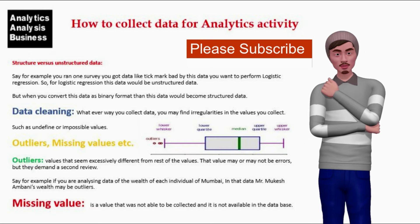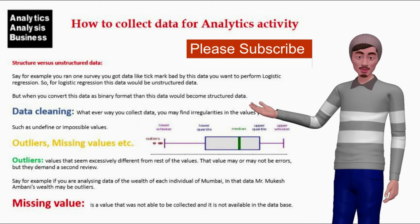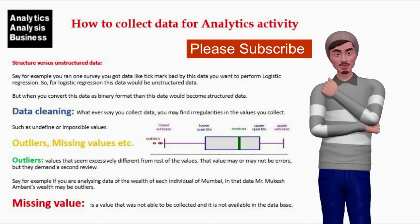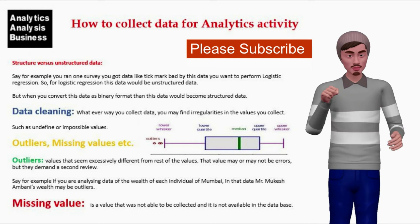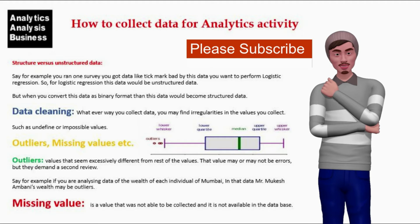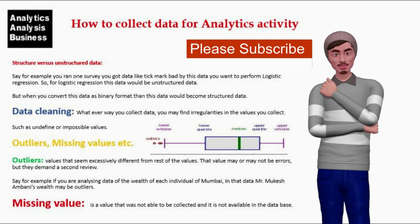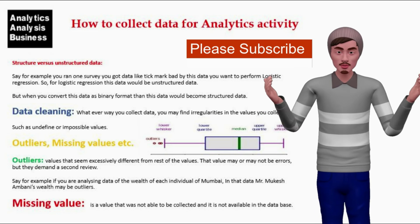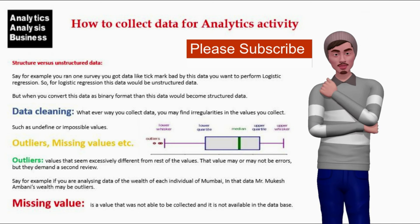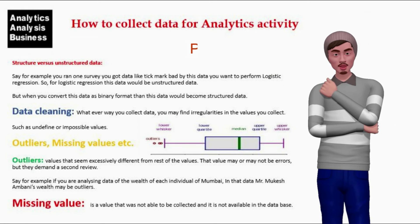Data cleaning: whatever way you collect data, you may find irregularities in the values — such as undefined or impossible values, outliers, and missing values. Outliers are values that seem excessively different from the rest of the values; they may or may not be errors, but they demand a second review. For example, if you are analyzing the wealth of each individual in Mumbai, Mr. Mukesh Ambani's wealth may be an outlier. A missing value is a value that was not able to be collected and is not available in the database.